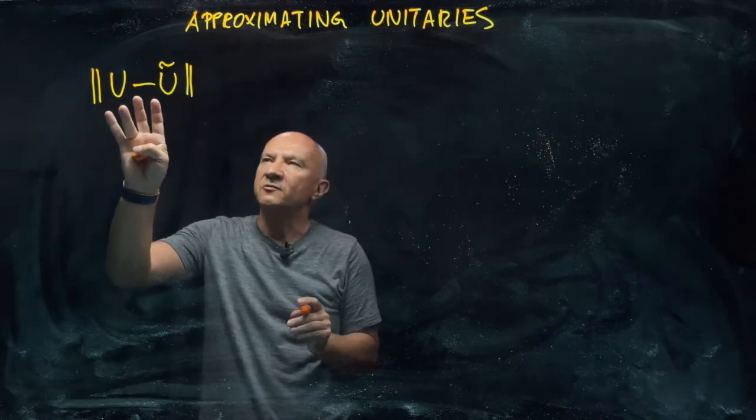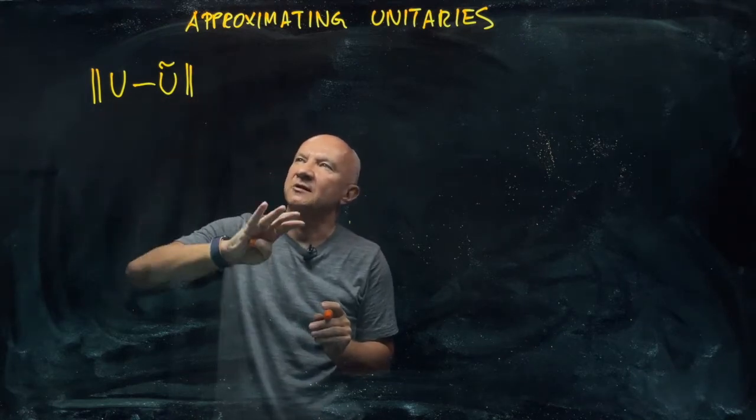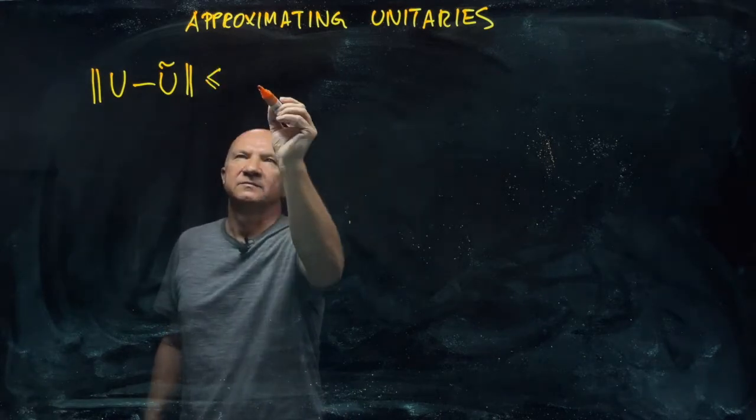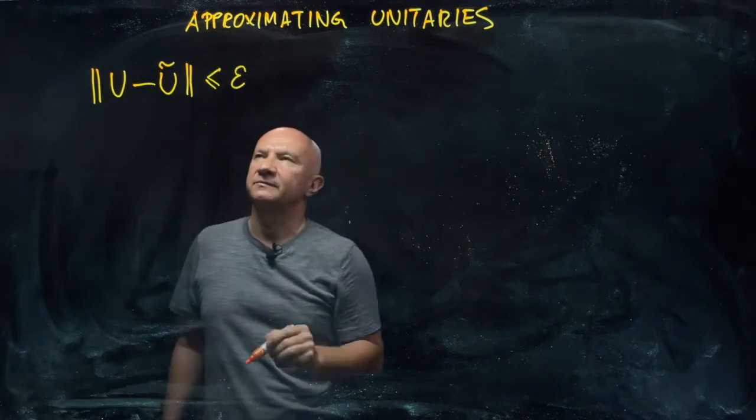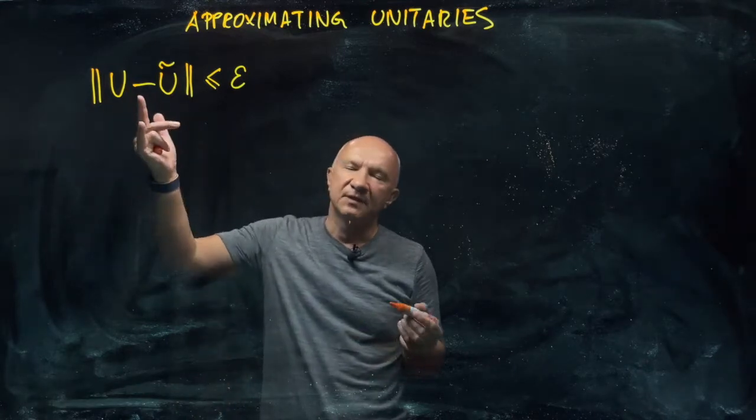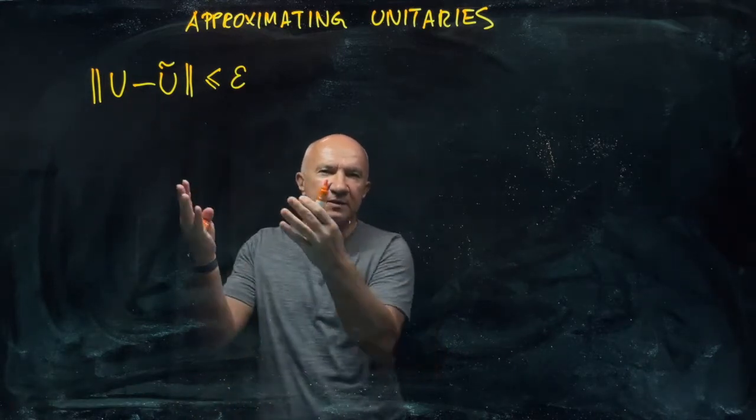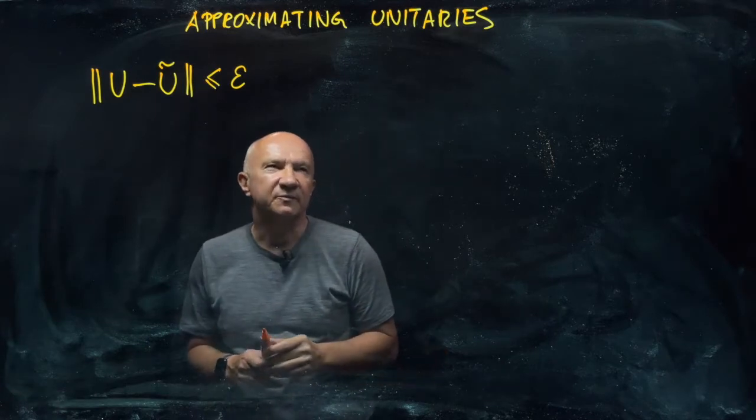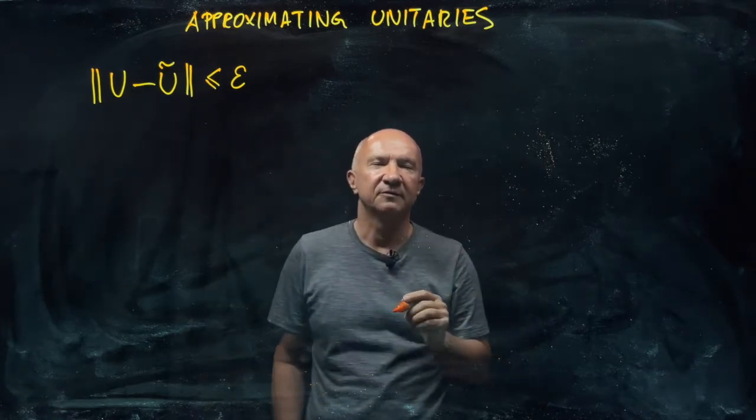So I say that u is epsilon close to u tilde if this distance is smaller than epsilon. Now, the operator norm that is inducing this metric here should be familiar to you, but just for completeness.